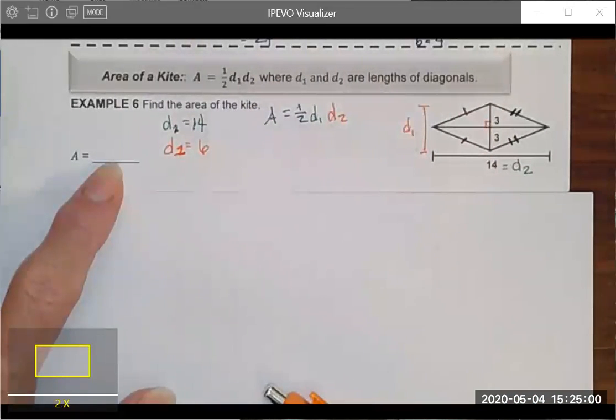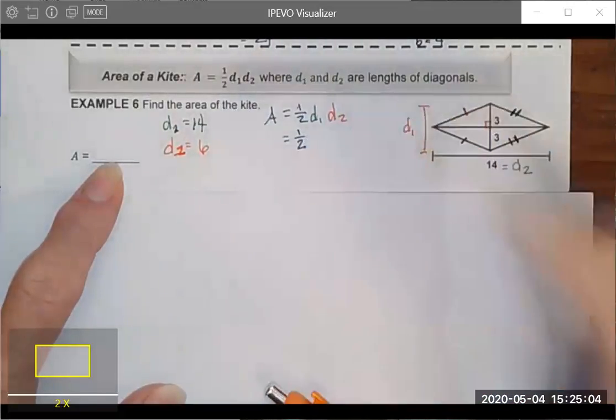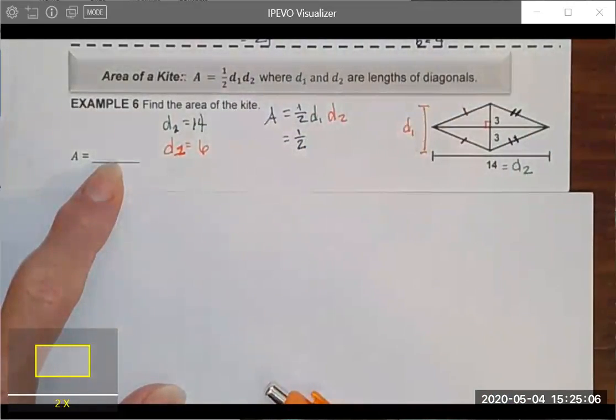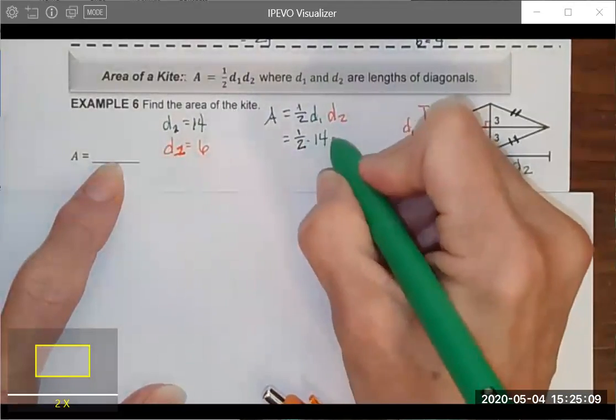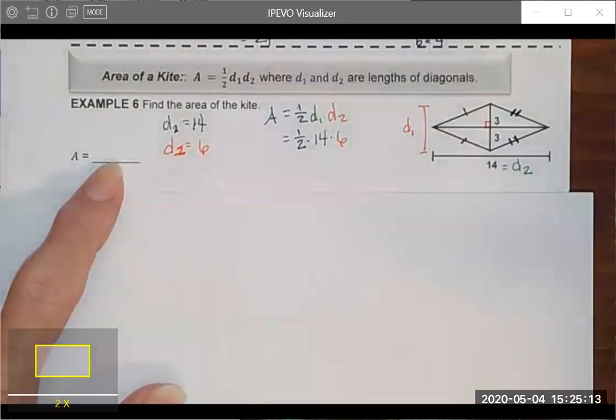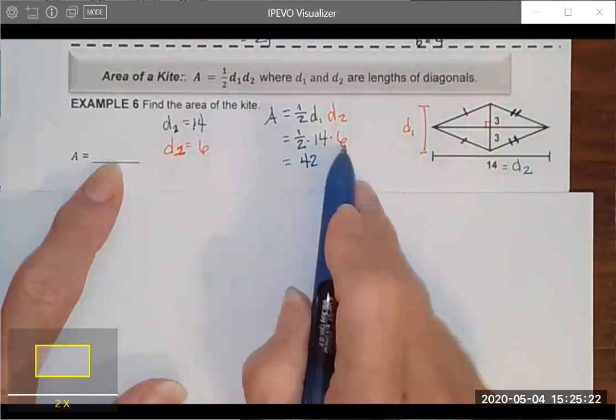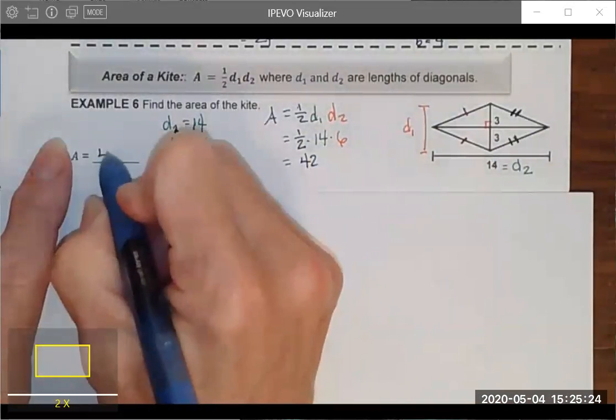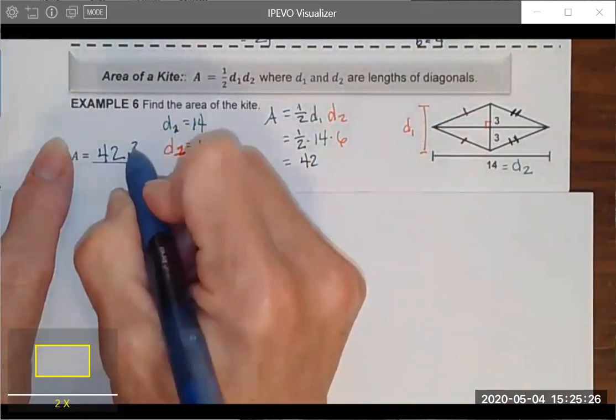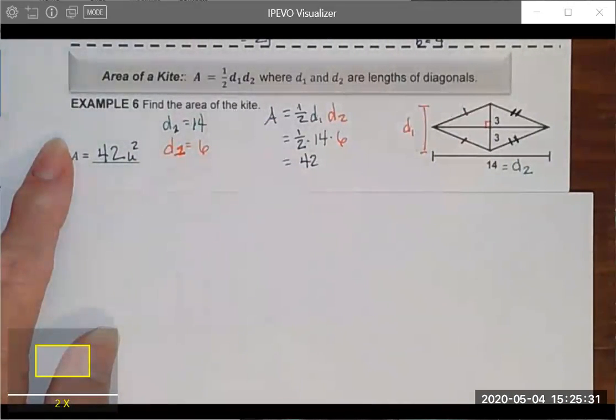So if I want to substitute in what I know, I'm going to do half of 14 times 6. Half of 6 is 3. 3 times 14 is going to give me 42. You could also do half of 14 is 7, 1 times 6 is 42. That's how you can use some mental math to make this a little bit faster. So the area of this kite is 42 units squared.